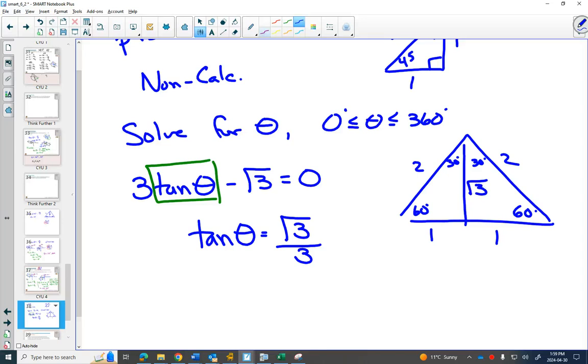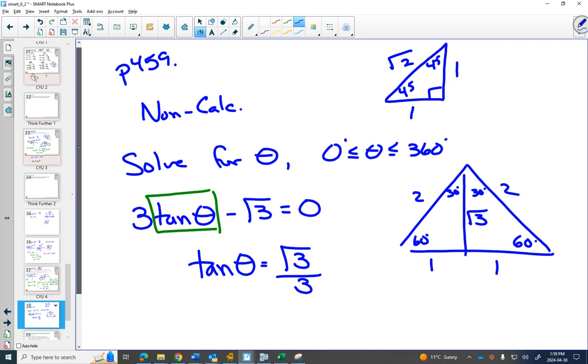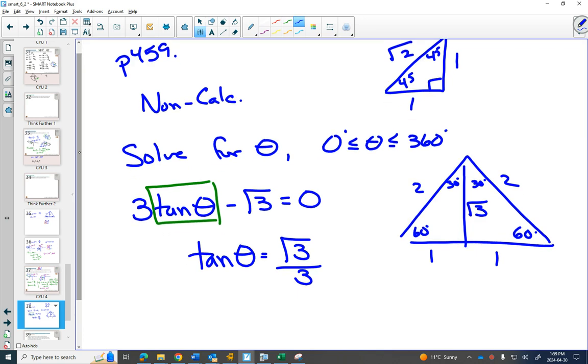We had a root 3 there. Now I have a root 3 in this one. I do not have a root 3 in my other special triangle. So it's making me think it's going to be this triangle.